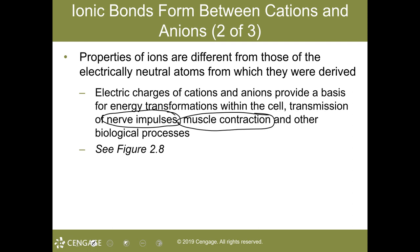Those charges provide the basis of the transformation of energy within the cell, as well as the transmission of nerve impulses — that's major — as well as the basis of muscle contraction. Ions are what make the body move. Your muscles could not contract unless first the sodium ions moved into that nerve cell to depolarize it, then leading to contraction at the neuromuscular junction.